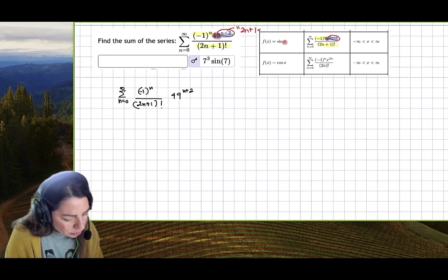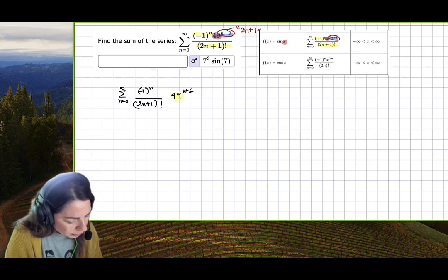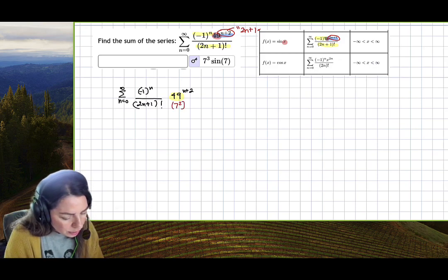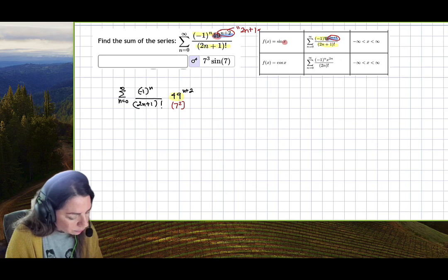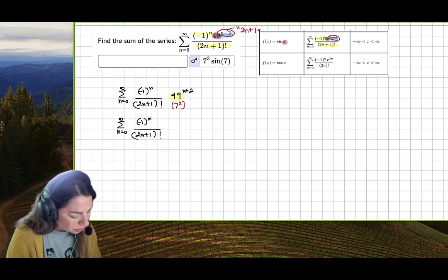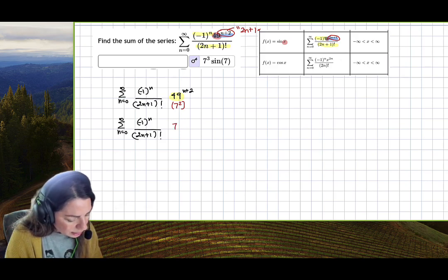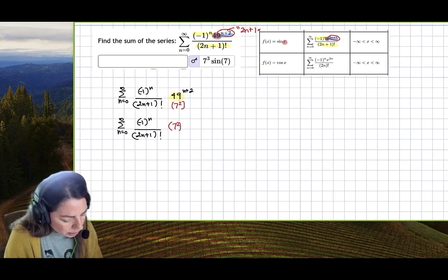I can rewrite this as base 7 squared. It is a perfect square. I'll take this first part, copy and paste it, and then rewrite 49 as 7 squared to the n plus 2.